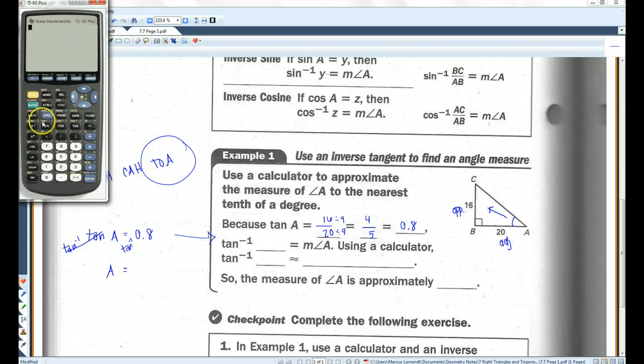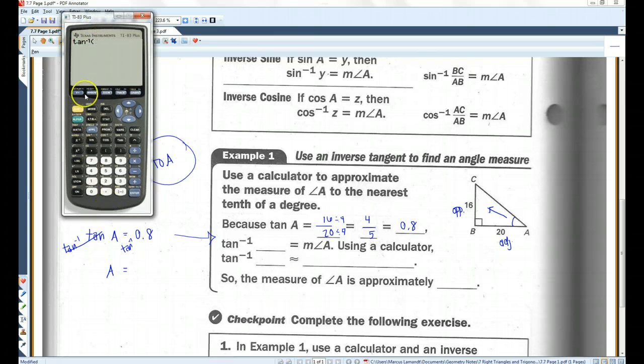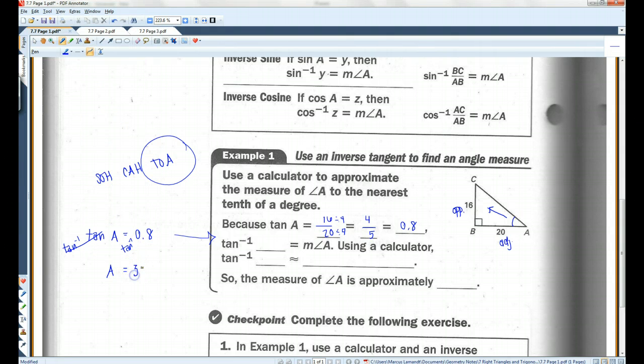So, the way you find inverse tangent on your calculator, you're going to hit second and tangent. You should get a little tangent with a negative 1 sign. Inverse tangent of 0.8. 38.65. And actually, they just want to the tenth, so 38.7.